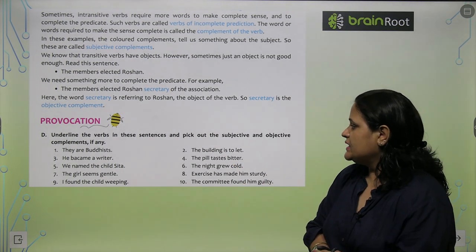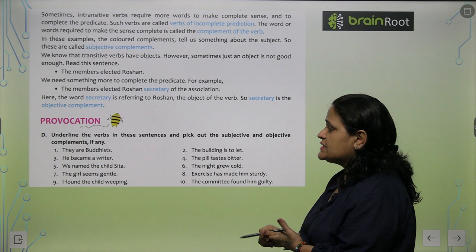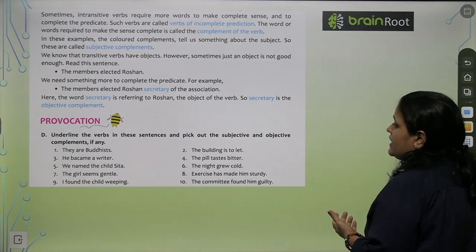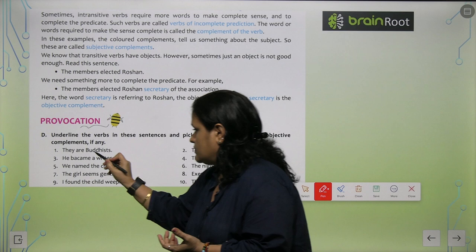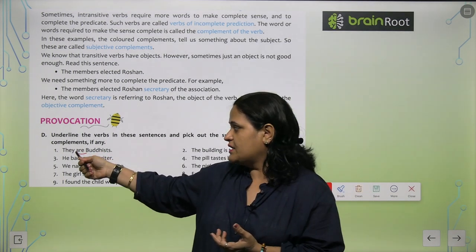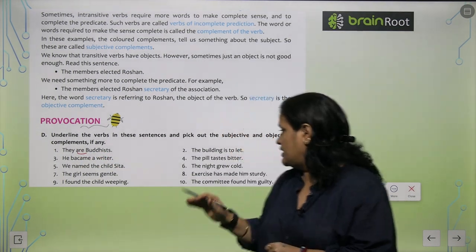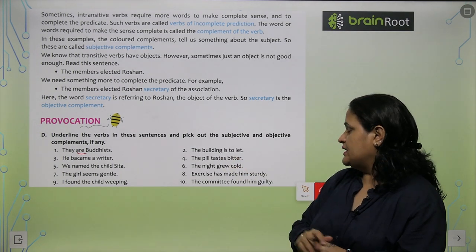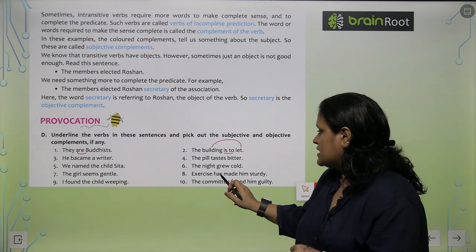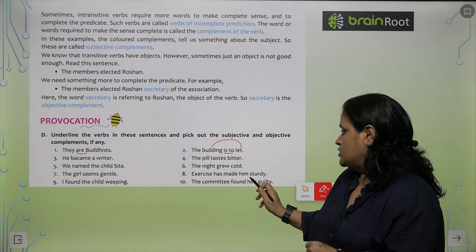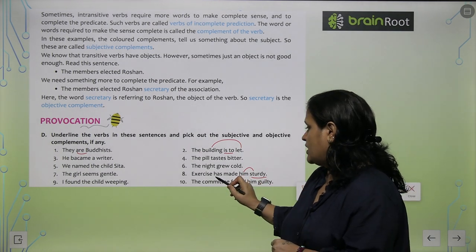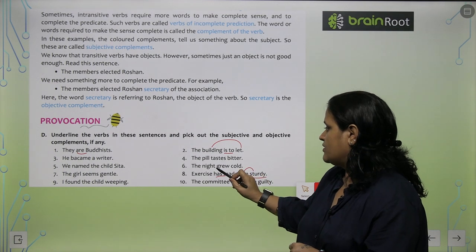Now the exercise number D: Underline the verb in these sentences and pick out the subjective and objective complements if any. They are Buddhist. So ye Buddhist kisko kar raha hai, they ko complement kar raha hai and they yaha par kya hai, subject, so subjective complement. The building is to let. To ye yaha par kisko kar raha hai, building ko. Exercise has made him sturdy. Sturdy yaha par kisko complement kar raha hai, him ko, so this is objective complement.